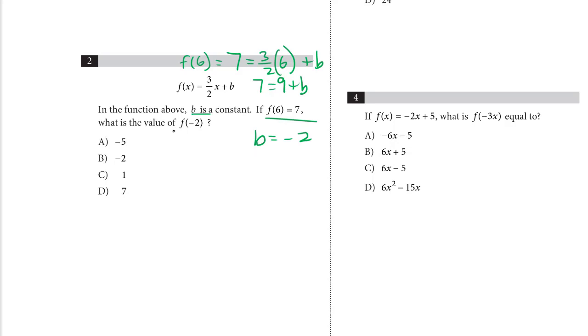Now, what is the value of f of negative two? We can plug that in. f of negative two equals three halves, negative two is our x value, and we know b at this point. It's minus two. So negative two over two is negative one. So that's minus three, minus two. f of two equals minus five. The correct answer for two is a.